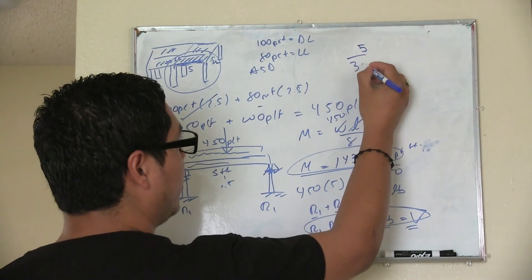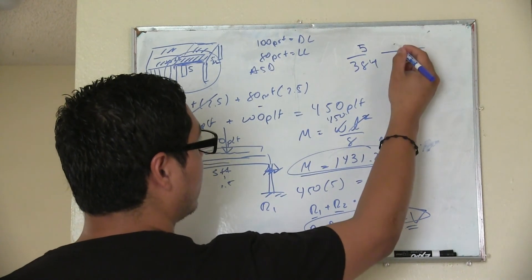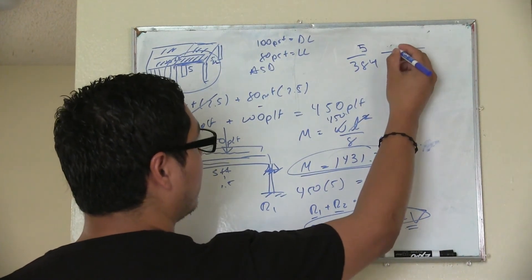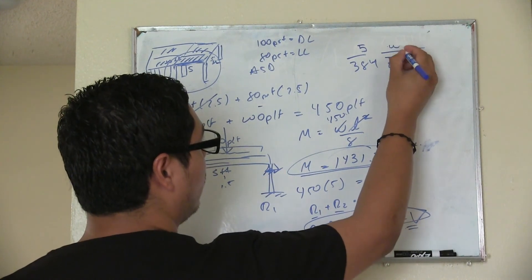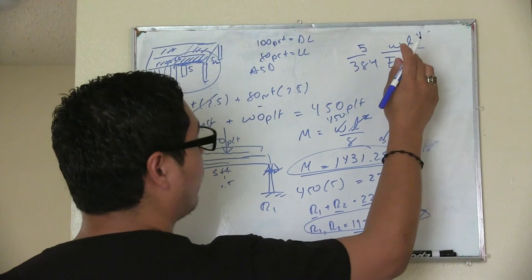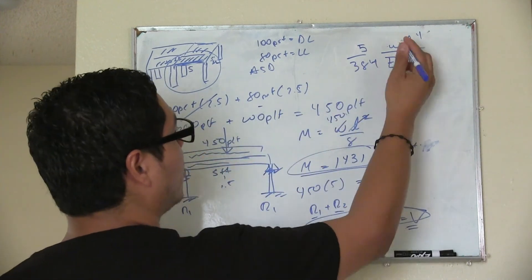I don't know the specific formula for the simple span. I think it's 5 over 384 times E I W L to the 4. I think this is the formula. So basically you just plug and chug.